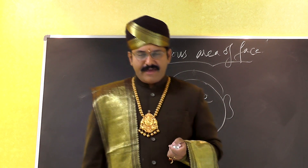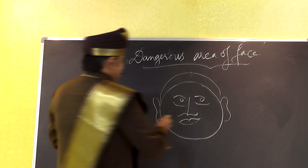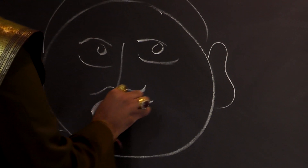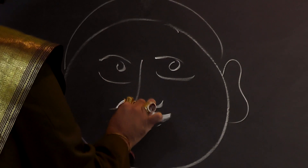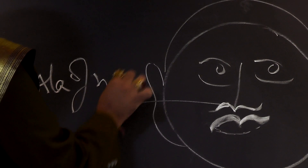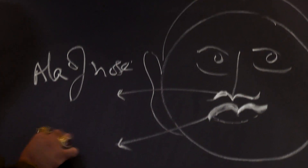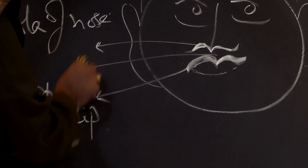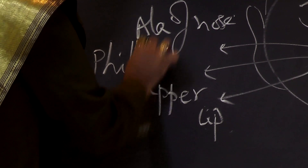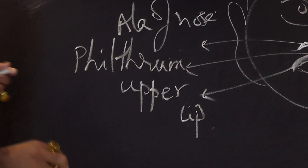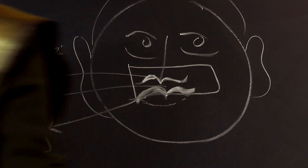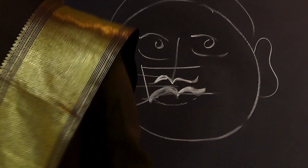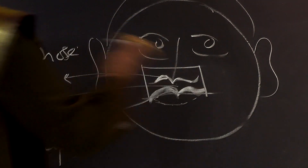The dangerous area of the face includes the upper lip, the ala of the nose (the lower part of the nose), the superior labium, and the philtrum. The philtrum is the area between the ala of the nose and the upper lip. These structures together — the upper lip, philtrum, and ala of the nose — constitute the dangerous area of the face, along with certain portions of the cheeks adjacent to the ala.